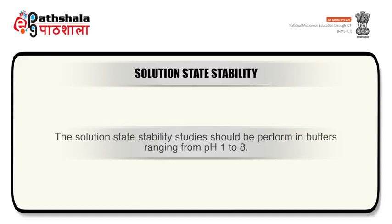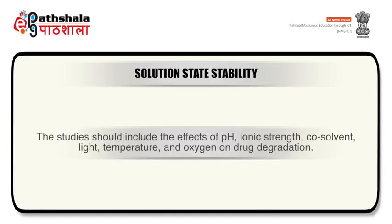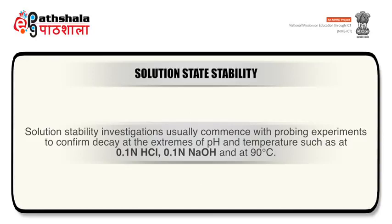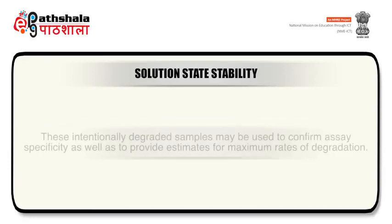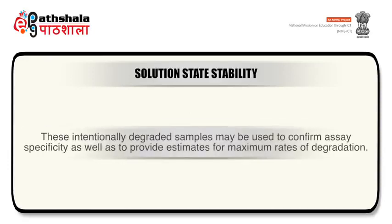The solution state stability studies should be performed in buffers ranging from pH 1 to 8. The studies should include the effect of pH, ionic strength, co-solvent, light, temperature and oxygen on drug degradation. Solution stability investigations usually commence with probing experiments to confirm decay at the extremes of pH and temperature, such as at 0.1 N HCl, 0.1 N NaOH, and at 90 degrees Celsius. These intentionally degraded samples may be used to confirm assay specificity as well as to provide estimates for maximum rate of degradation.